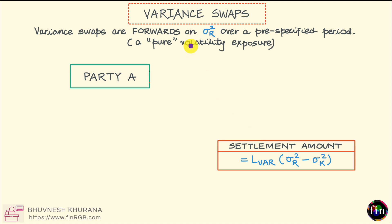In practice, variance swaps find usage for hedging an existing exposure to volatility or for speculating on volatility. Hedging and speculation on volatility can also be done using simple vanilla options — simple calls and puts. But simple vanilla options' value not only depends on volatility, it also depends on the level of the underlying asset. Therefore, simple vanilla options mix volatility risk exposure with directional risk exposure with respect to the underlying asset. In comparison, variance swaps offer a pure volatility exposure, not contaminated by directional movements in the underlying asset.